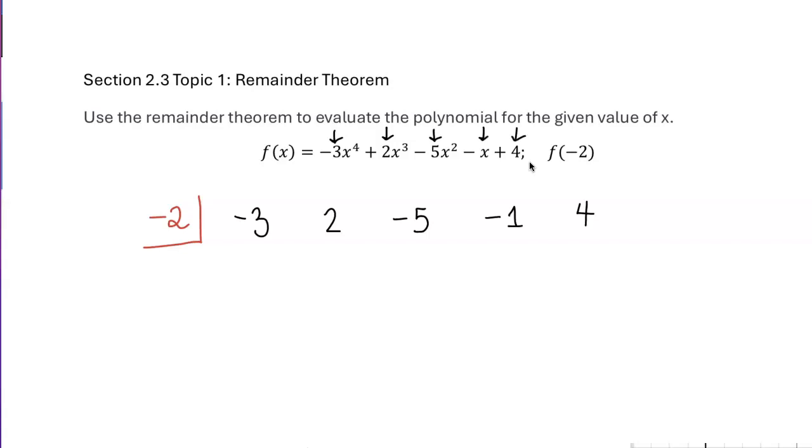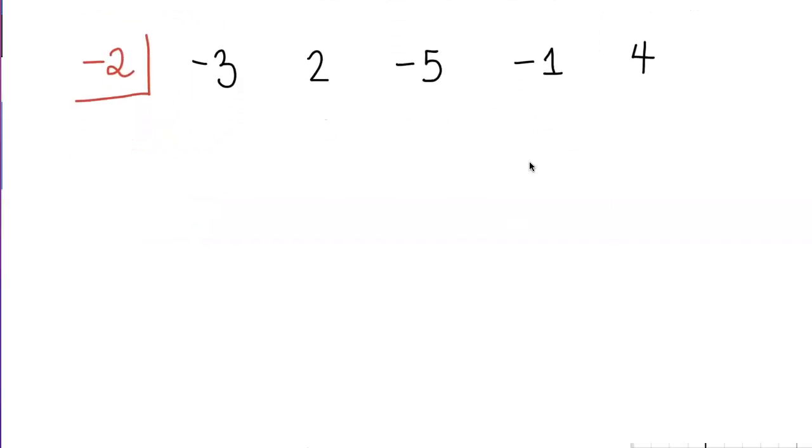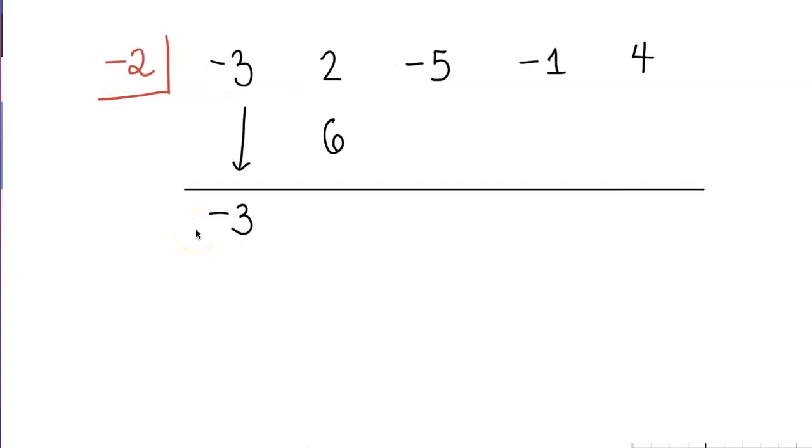Now let's start the synthetic division. Bring the first number straight down without doing anything, so negative 3 comes down. Now multiply negative 3 with the number in the box, negative 2. Negative 2 times negative 3 gives positive 6. Add these two numbers: 2 plus 6 equals 8.